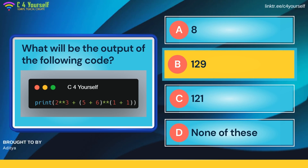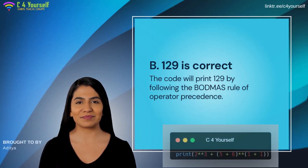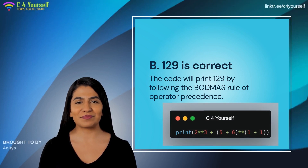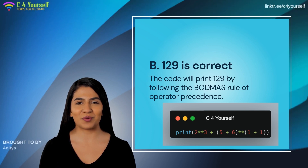The correct answer is 129. Did you answer correctly? Option B, which is 129, is the correct answer. Because the code shown will print 129 by following the BODMAS rule of operator precedence. Let's look at what we have next.